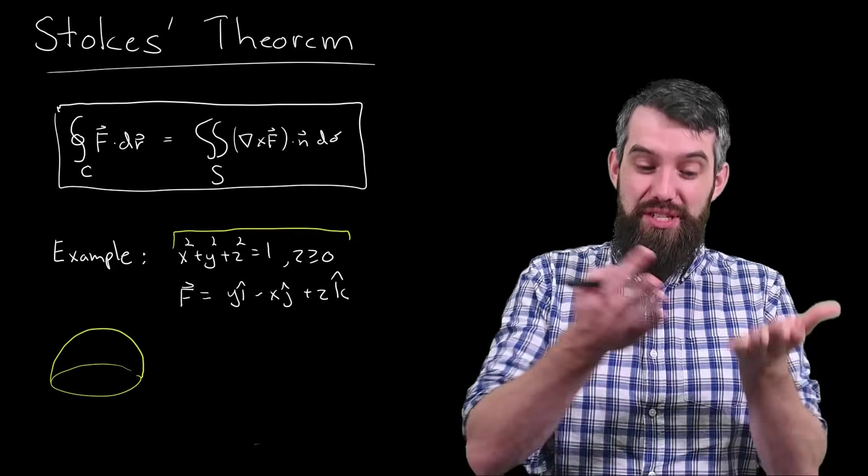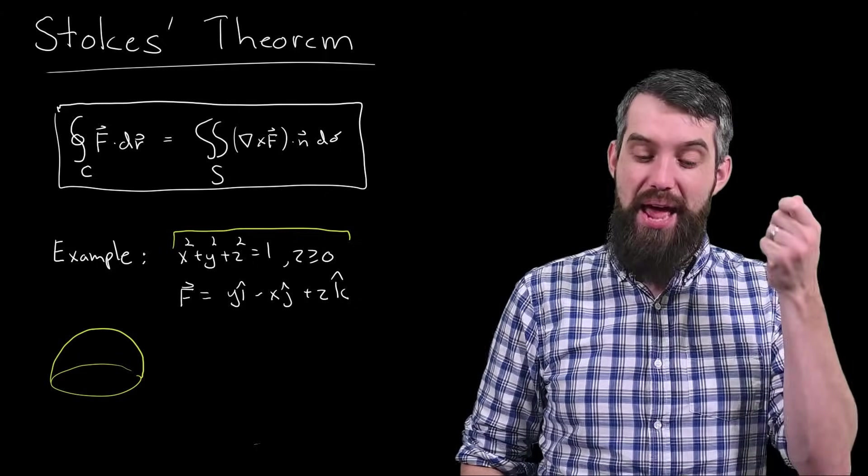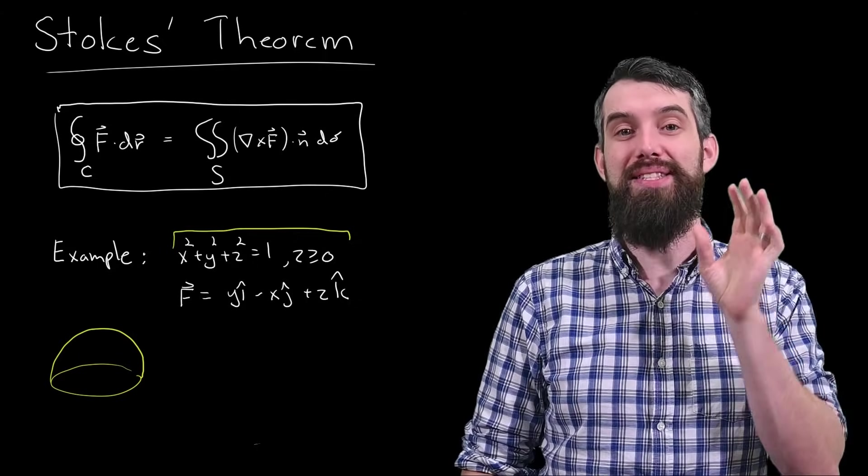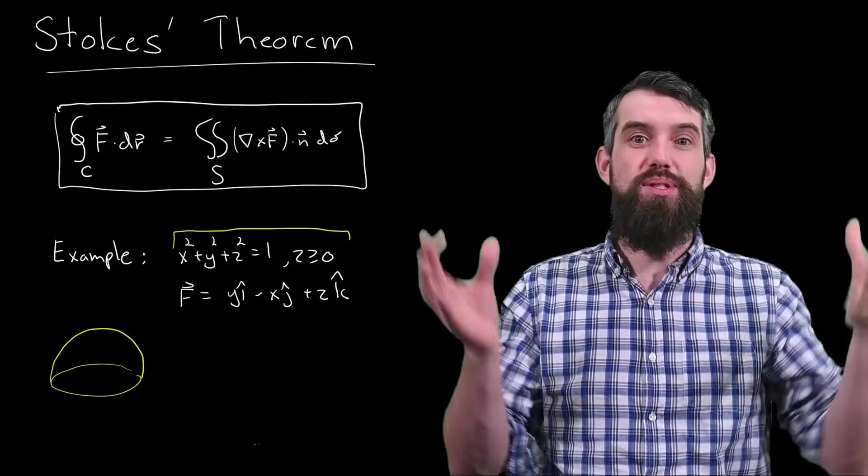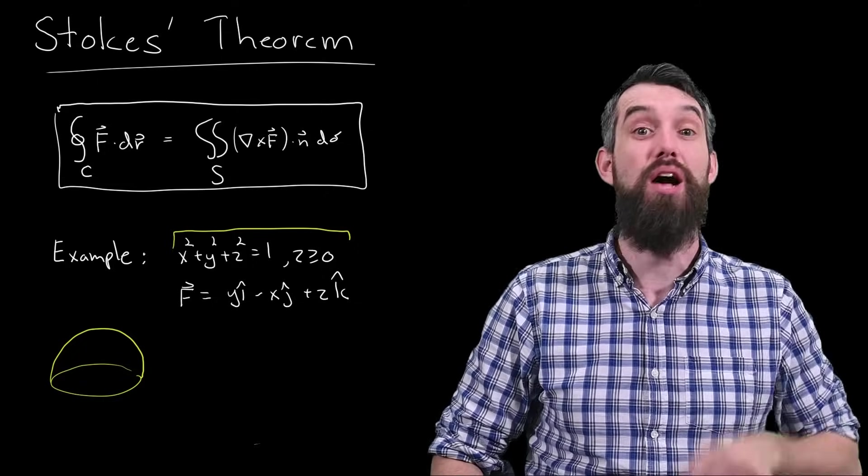And then through that surface, we have this vector field y in the i-hat, minus x in the j-hat, and z in the k-hat. Just some vector field. It doesn't matter too much for the purposes of our story here.